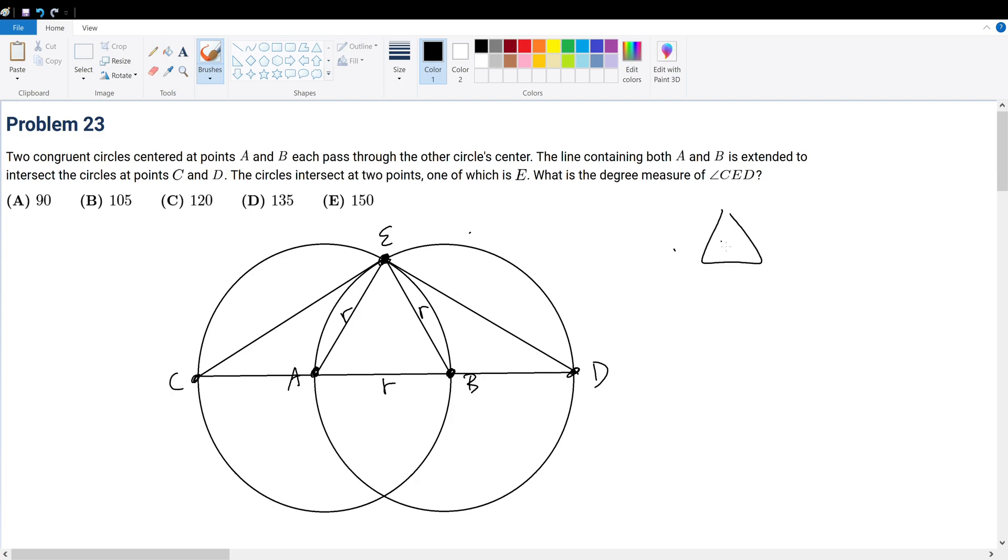I have a triangle where all three sides are congruent. What does that mean? That means this is 60 degrees, that means this is 60 degrees, that means this is also 60 degrees.